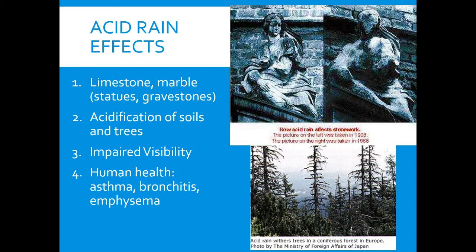Acid rain has a lot of effects. It doesn't really exist a whole lot on the west coast because the prevailing wind in the United States goes from west to east, so we don't have many coal plants to the west of us sending pollution into the atmosphere to fall as rain on us. Examples include limestone and marble degradation. The reason the Statue of Liberty is green rather than bright copper is because of acid rain. It can also cause impaired visibility, human health problems, and harm soil and trees. More acid in the soil is not a good thing.